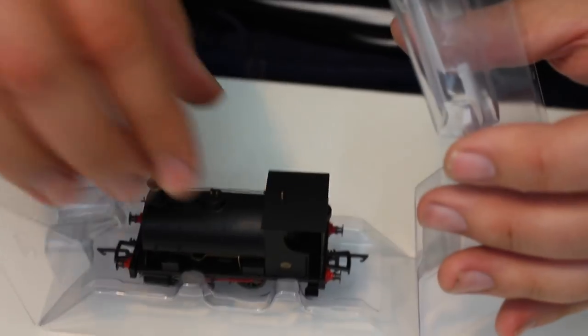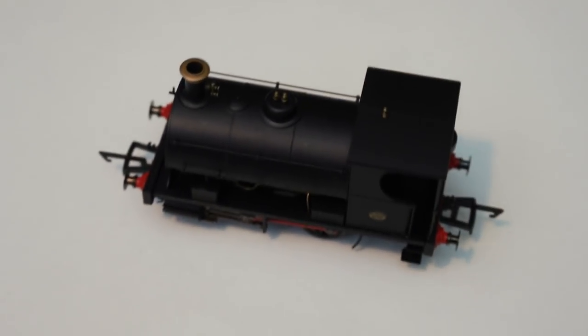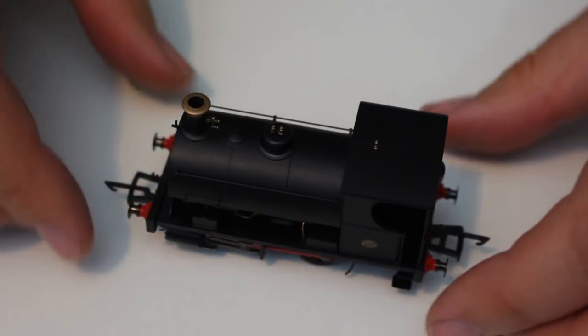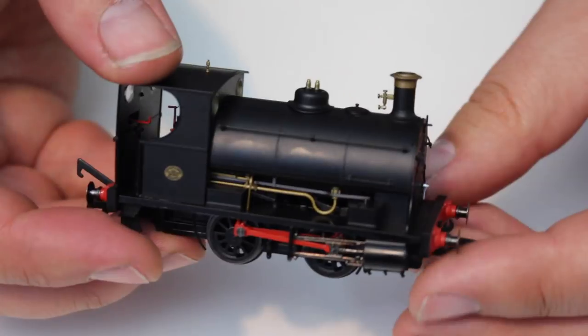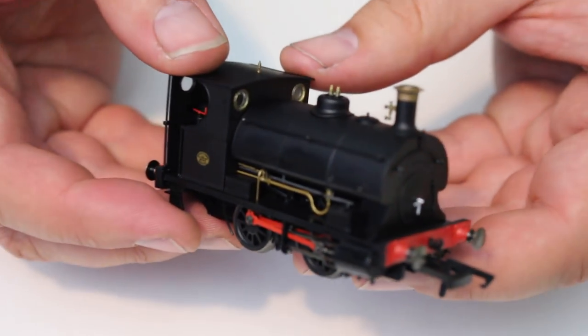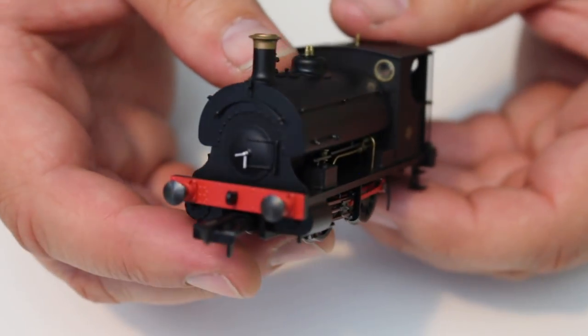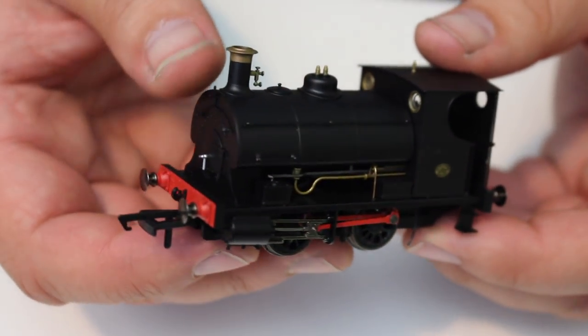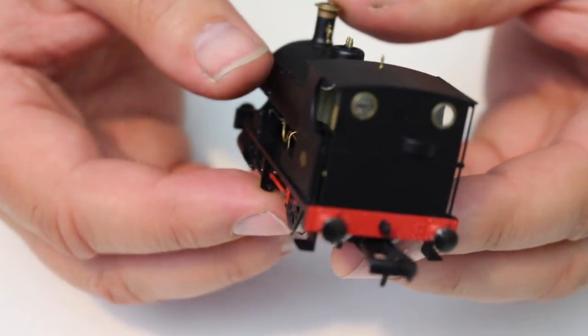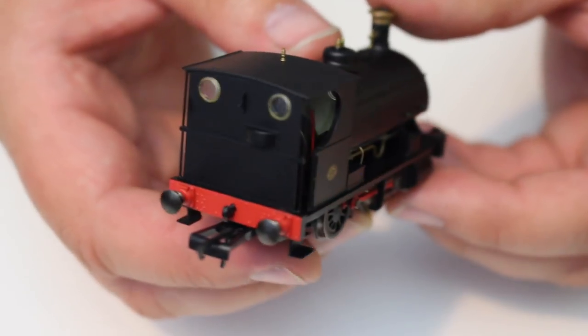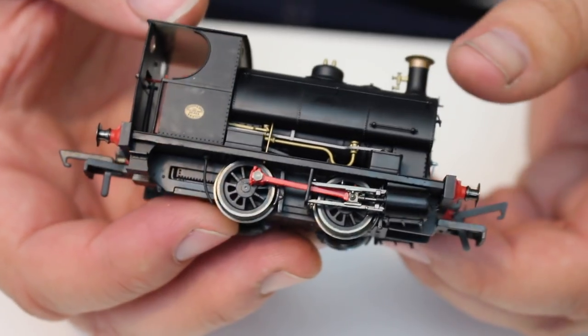We're going to just pop it out of all of this packaging. It's pretty standard packaging and quite easy to get out actually and we can see there the rather plain black livery. It might look pretty boring compared to the Huntley and Palmers or the Peckett Leaf Green Works livery, but actually for a lot of modelers this is the livery that they were asking for when Hornby first announced the locomotives.